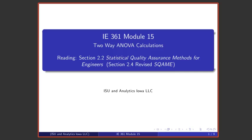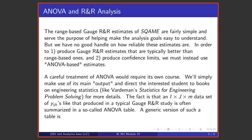Welcome to module 15 in this series of lectures on statistical quality assurance and statistical process improvement. We're discussing two-way analysis of variance and its application to gauge R&R studies.